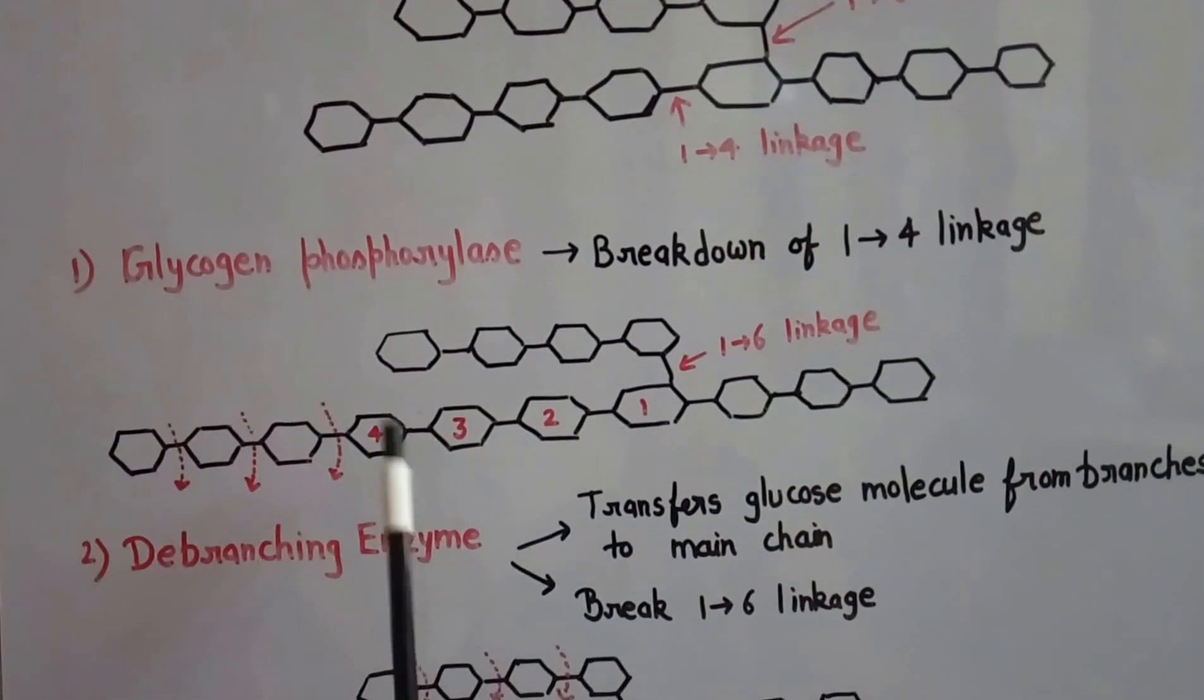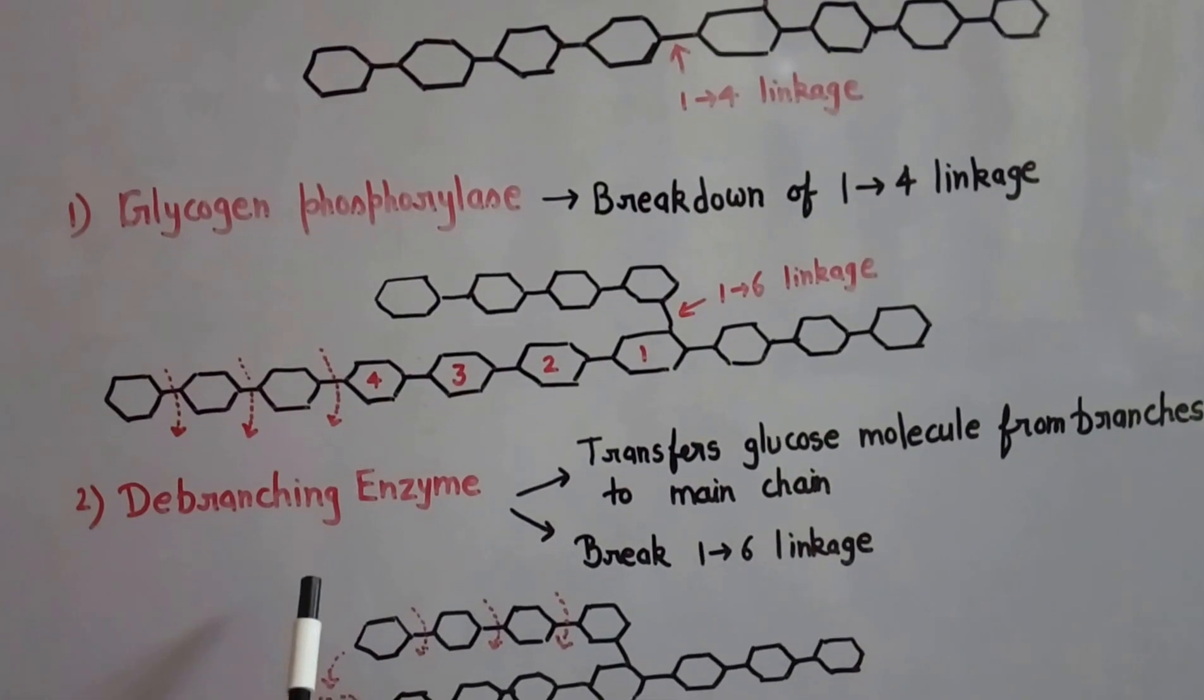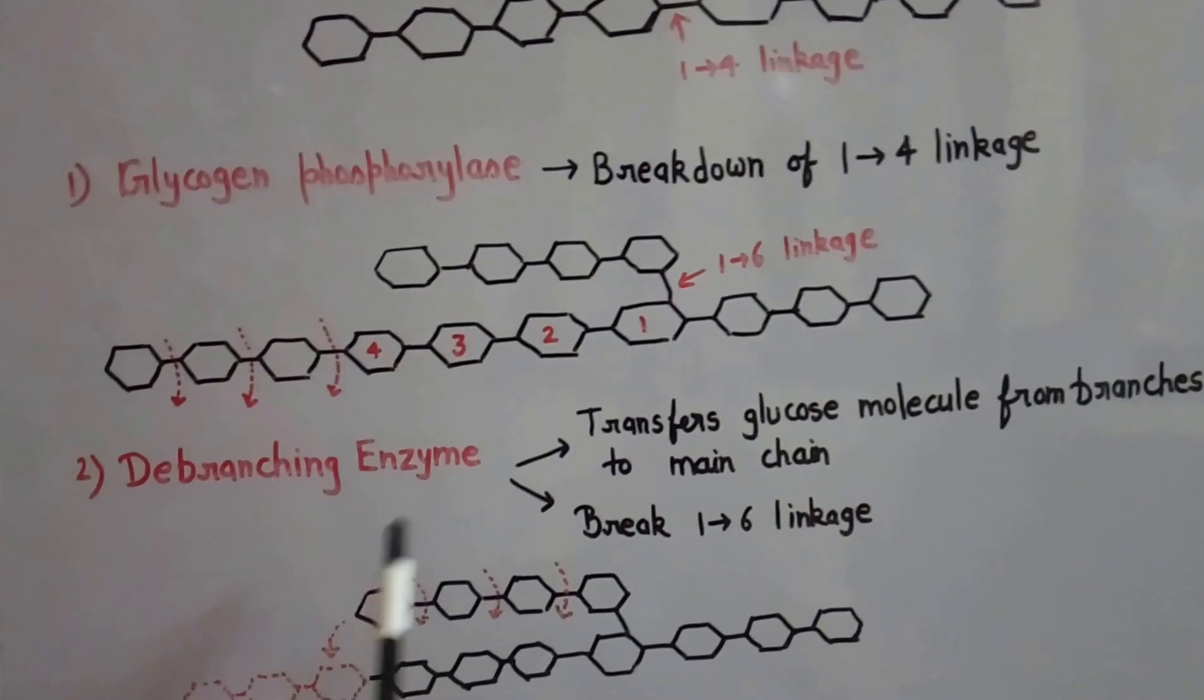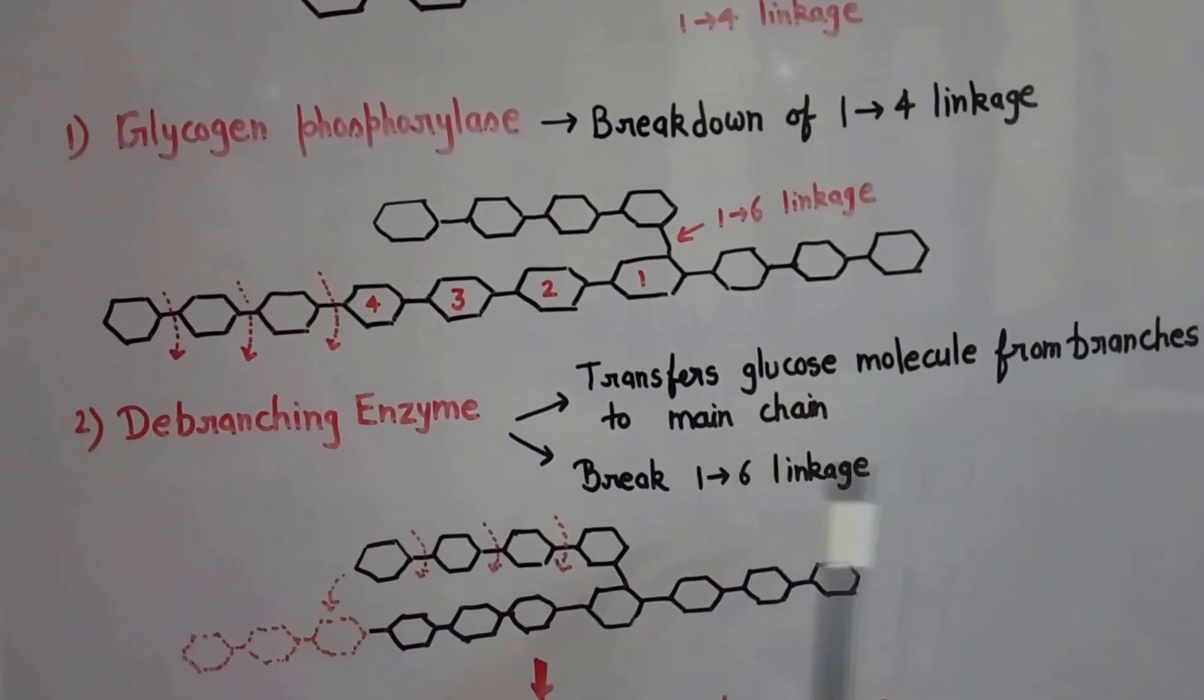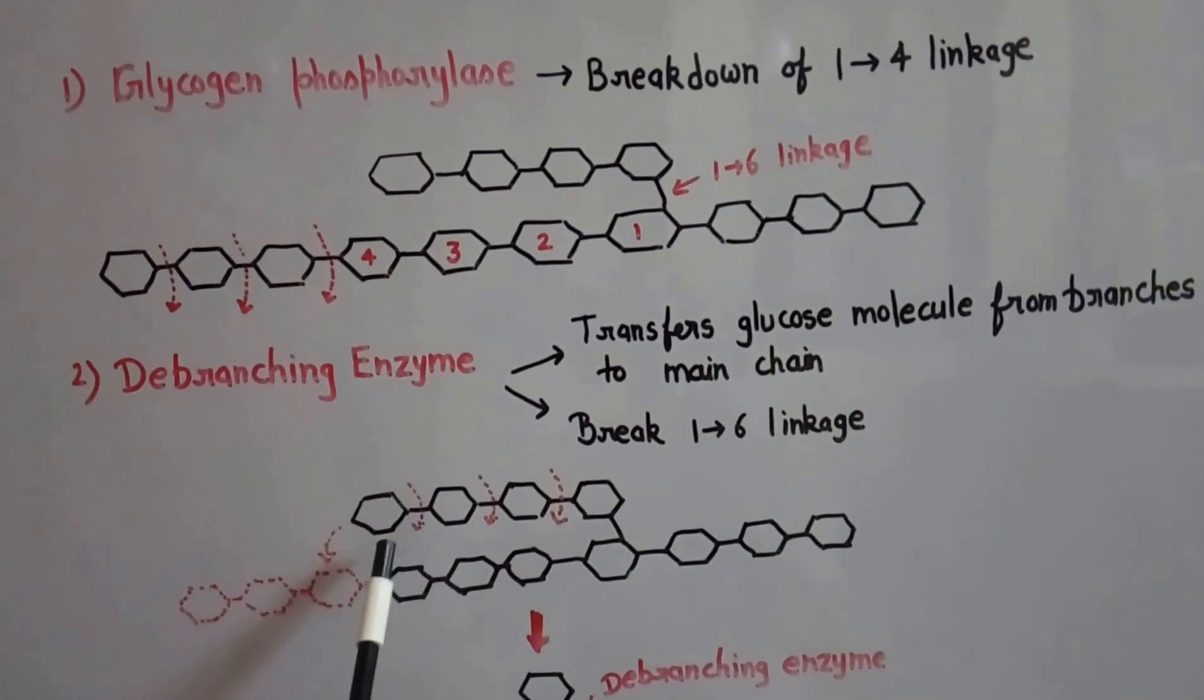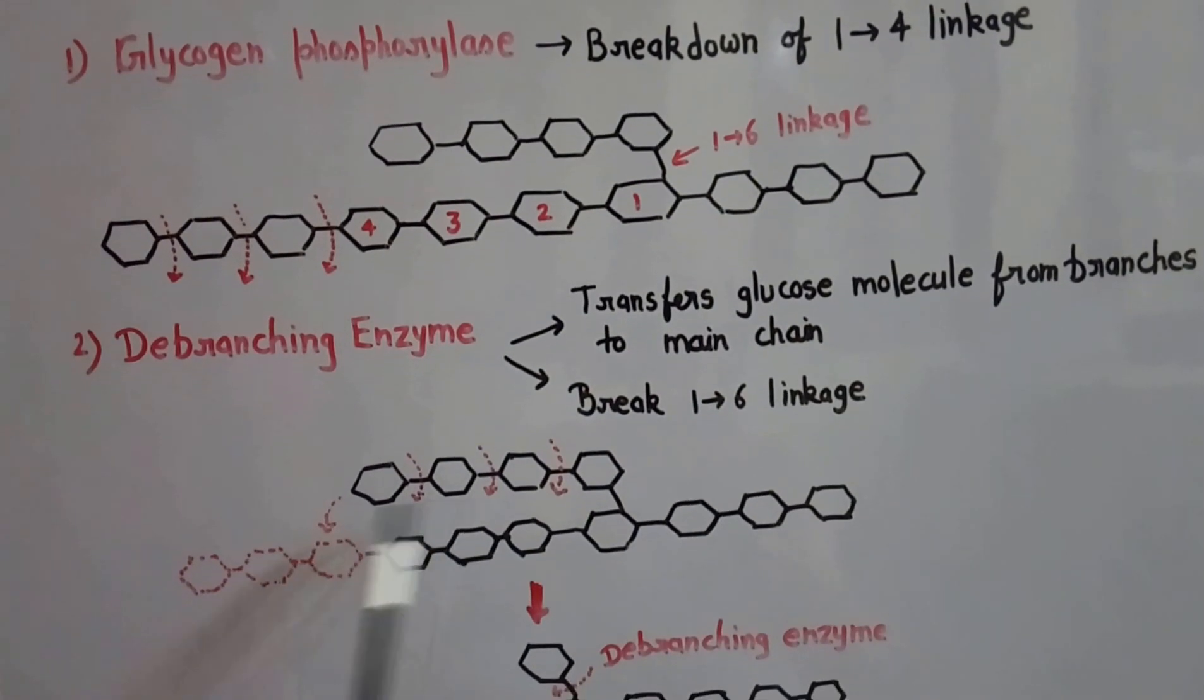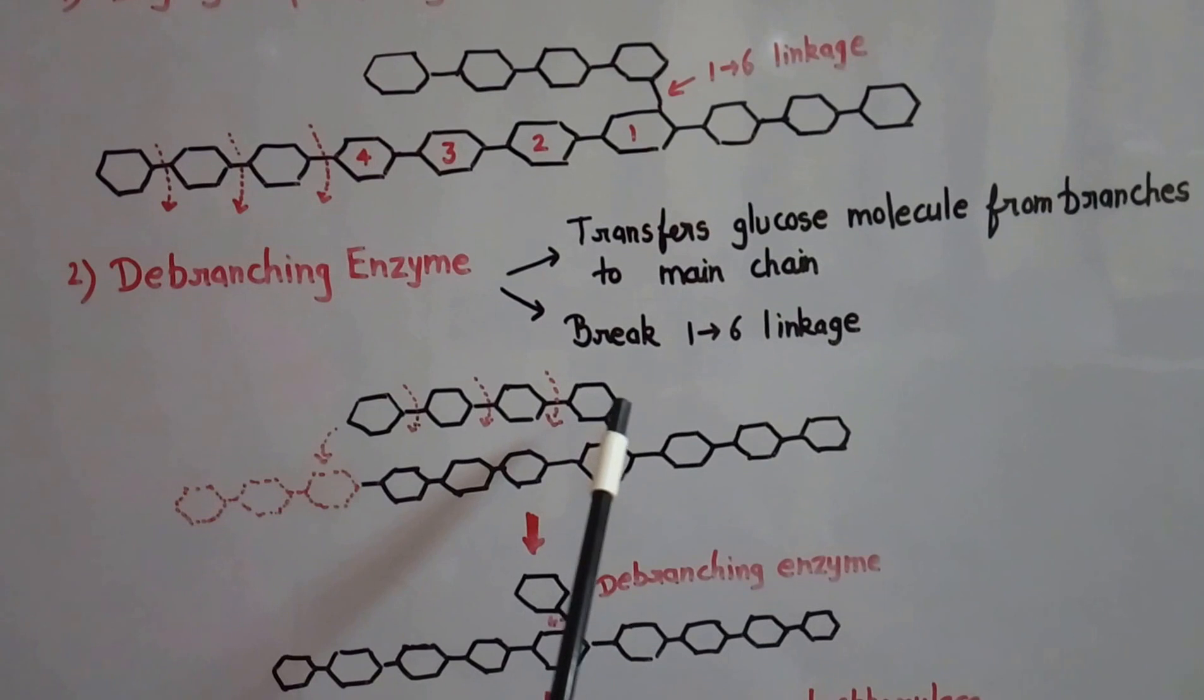Now, the action of this enzyme stops and another enzyme, the de-branching enzyme, functions in two ways. Firstly, it transfers glucose molecules from the branches to the main chain. This enzyme transfers glucose until there is one glucose molecule remained.